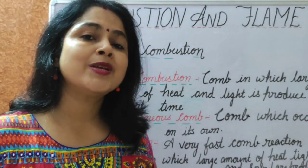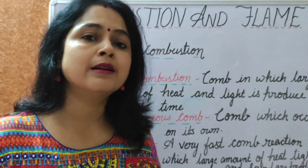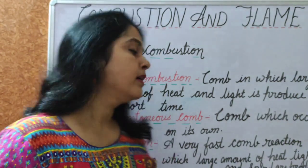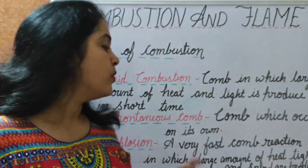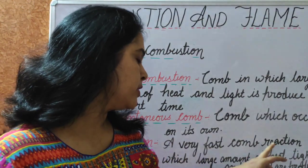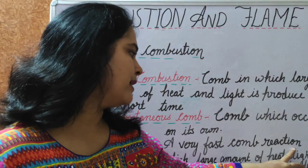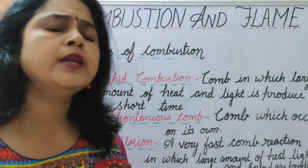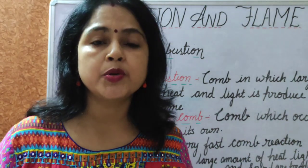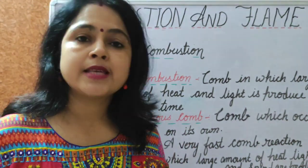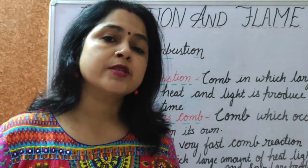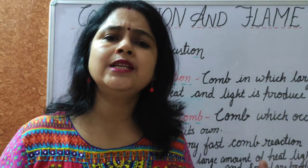Coal dust in coal mines also attains its ignition temperature in extreme summers and starts burning, spreading fire through the entire coal mine. The next type is explosion. Explosion is a very fast combustion reaction in which a large amount of heat, light, and sound are produced simultaneously. Examples include bursting of firecrackers during Diwali festival, and bombs exploded by terrorists. In a single step, a large amount of heat and light is produced due to the expansion of hot gases.